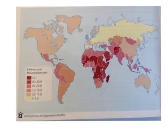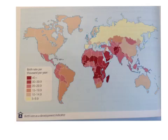Birth rate is closely correlated with level of development. The more developed a country, the lower its birth rate. The demographic transition model that we looked at in the population topic gives us evidence that birth rate decreases as countries become more developed, and we can see that on this map here. A country at a further stage of development is likely to have a high Human Development Index, a low infant mortality rate, and widespread access to clean water. There are likely to be many doctors for the number of people and literacy rates will be high.